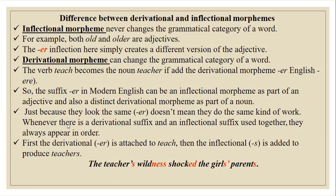Whenever a derivational suffix and an inflectional suffix are used together, they always appear in a fixed order. For example, first the derivational '-er' is attached to 'teach', then the inflectional '-s' is added to produce 'teacher' → 'teachers'. Consider the sentence: 'The teacher's wildness shocked the girl's parents.' We are going to analyze this sentence in the next slide.